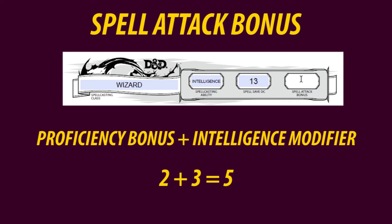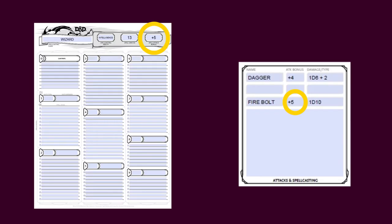The spell attack bonus is his proficiency bonus plus his intelligence modifier — a +5. The spell attack bonus is used when a spell requires the character to make an attack roll, whether it's a melee or ranged attack. This is the case for the fire bolt spell shown earlier in the attack and spellcasting section — so go back and fill it in.